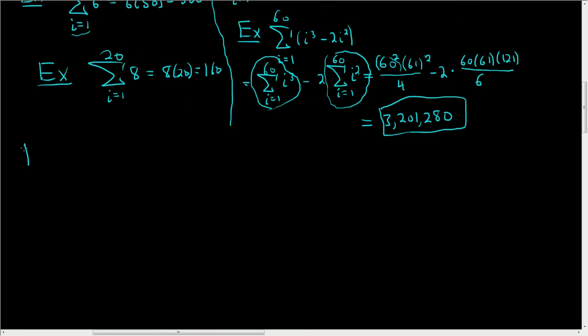Another example. How about this one? i goes from 1 to 100 of 3i. So in this case, we'll use this formula here. I'll write it down again. This is n, n plus 1, all divided by 2. So the 3 hangs out.